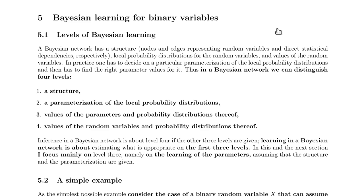First of all, there's a level of structure, so we have to decide for a particular problem how many nodes there are and how they should be connected. Secondly, we have to decide on the parameterization of the local probability distribution, so the way we represent the probability distributions.